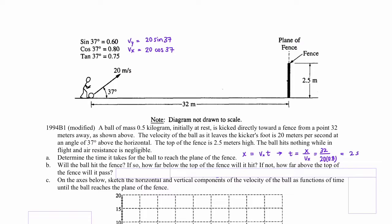Part B: will the ball hit the fence? If so, how far below the top of the fence will it hit? If not, how far above the top of the fence will it pass? Again, we're going to want to use a kinematics equation, but this time we need an equation that not only includes time, but also is in the y direction and can include gravity that will be accelerating the ball in the vertical direction. So we're going to want to use this equation.